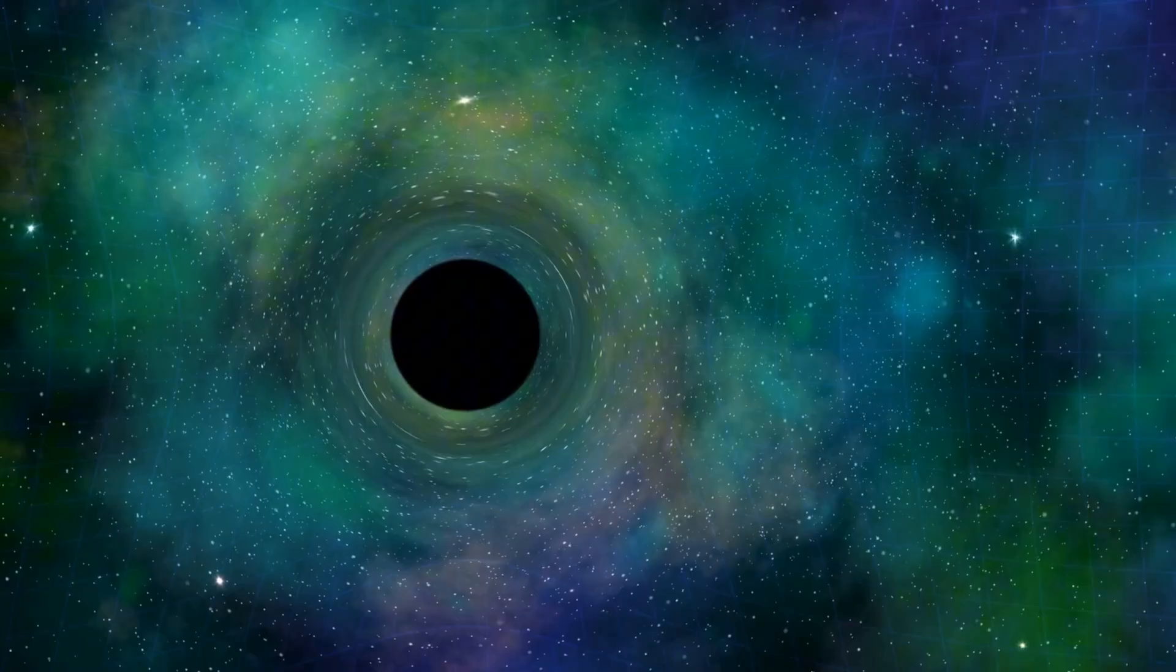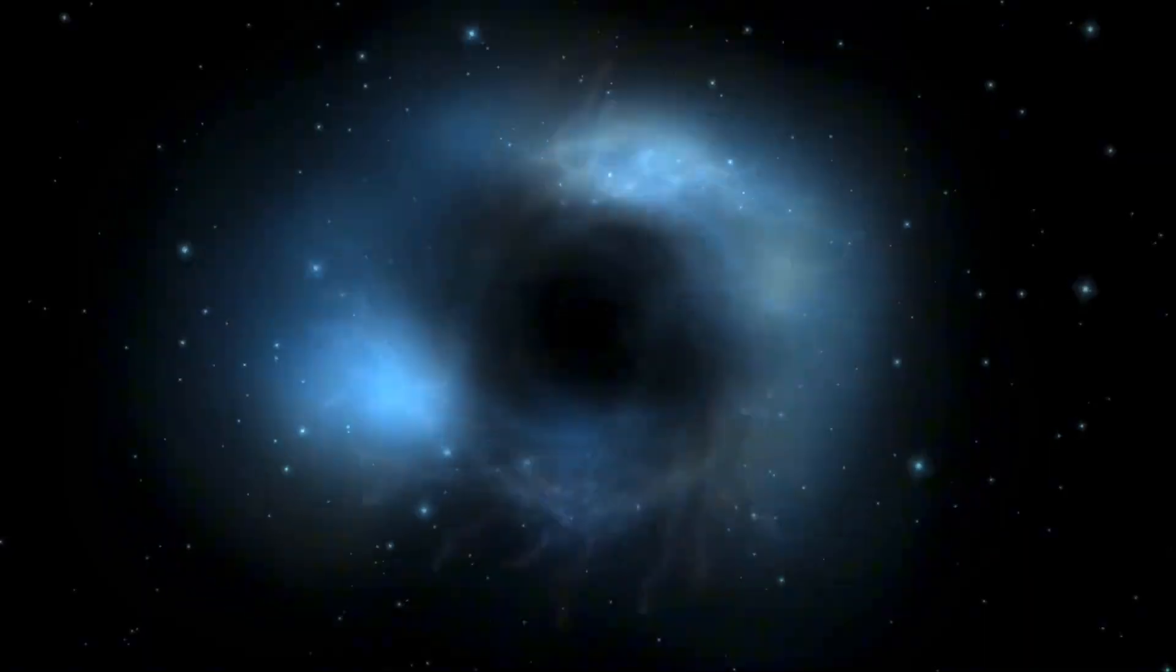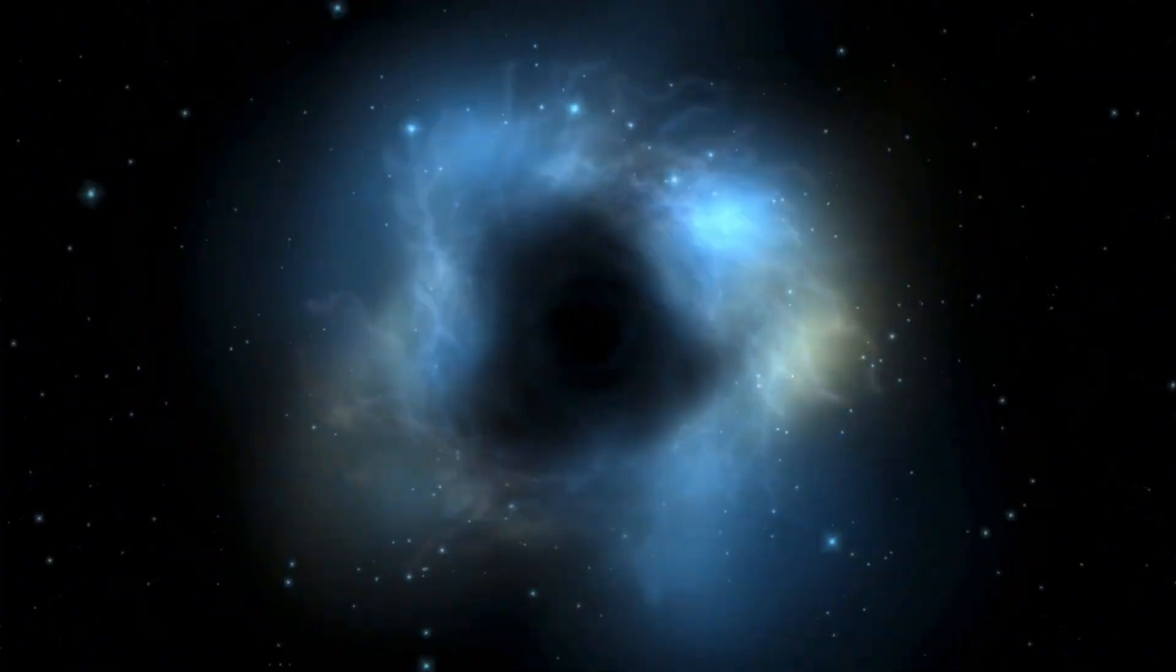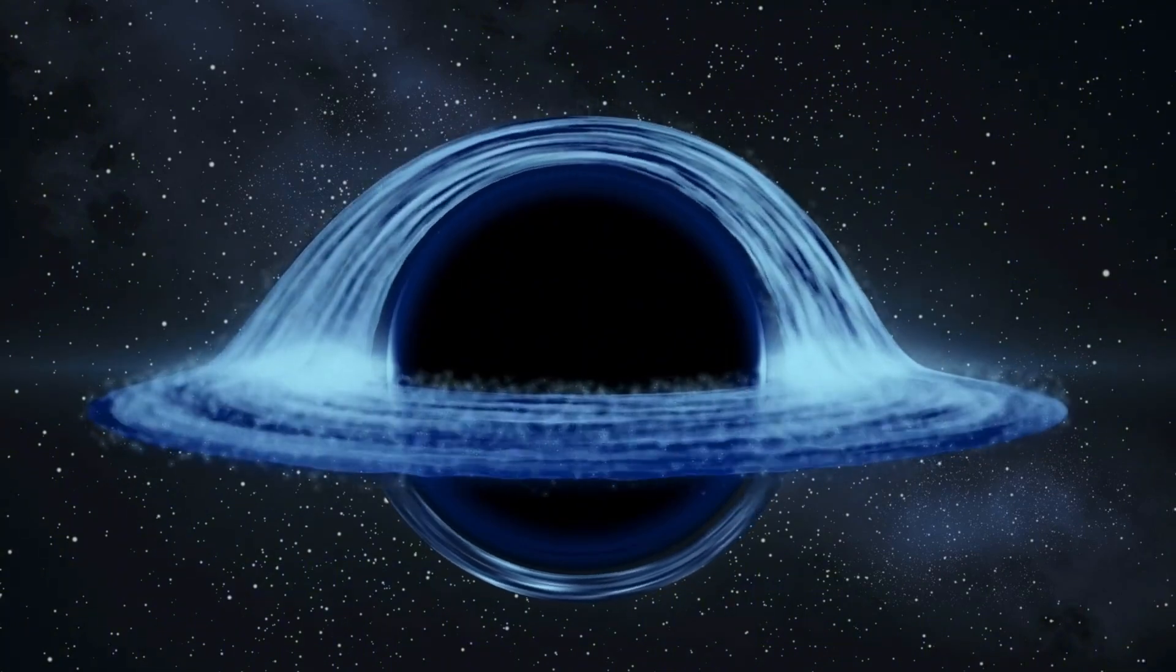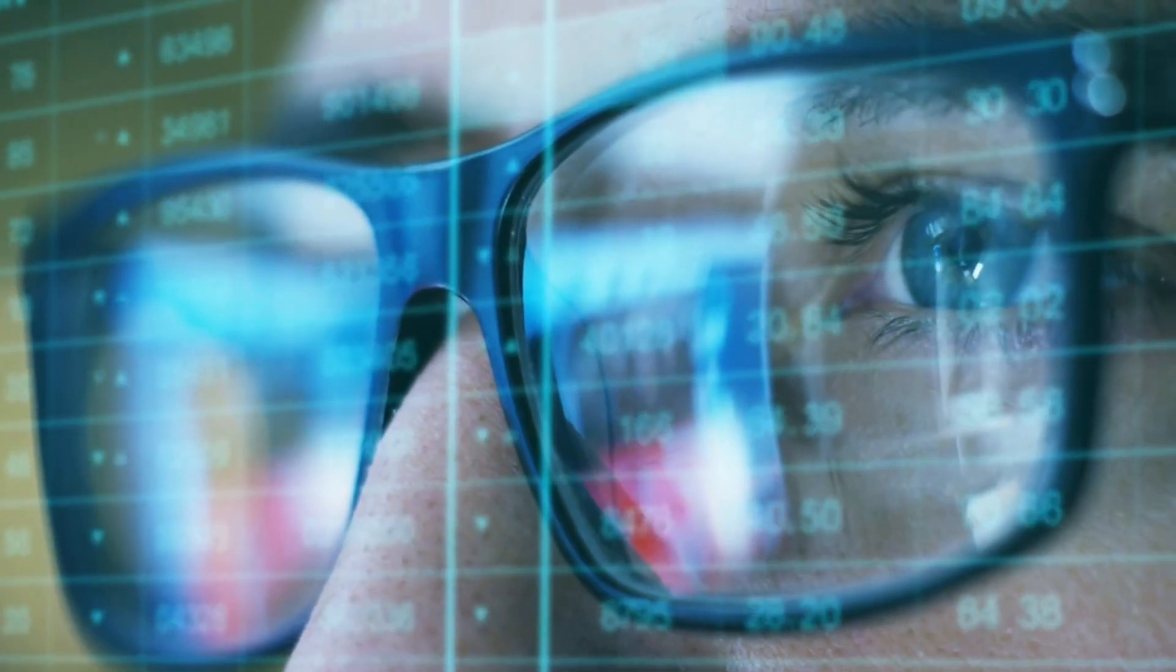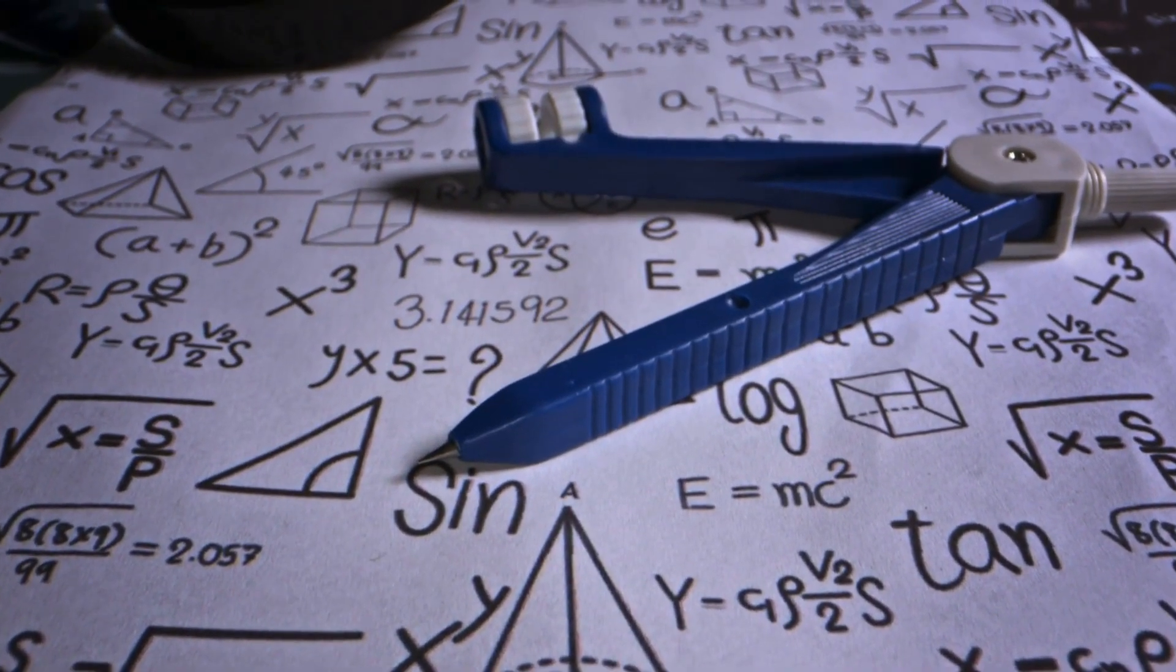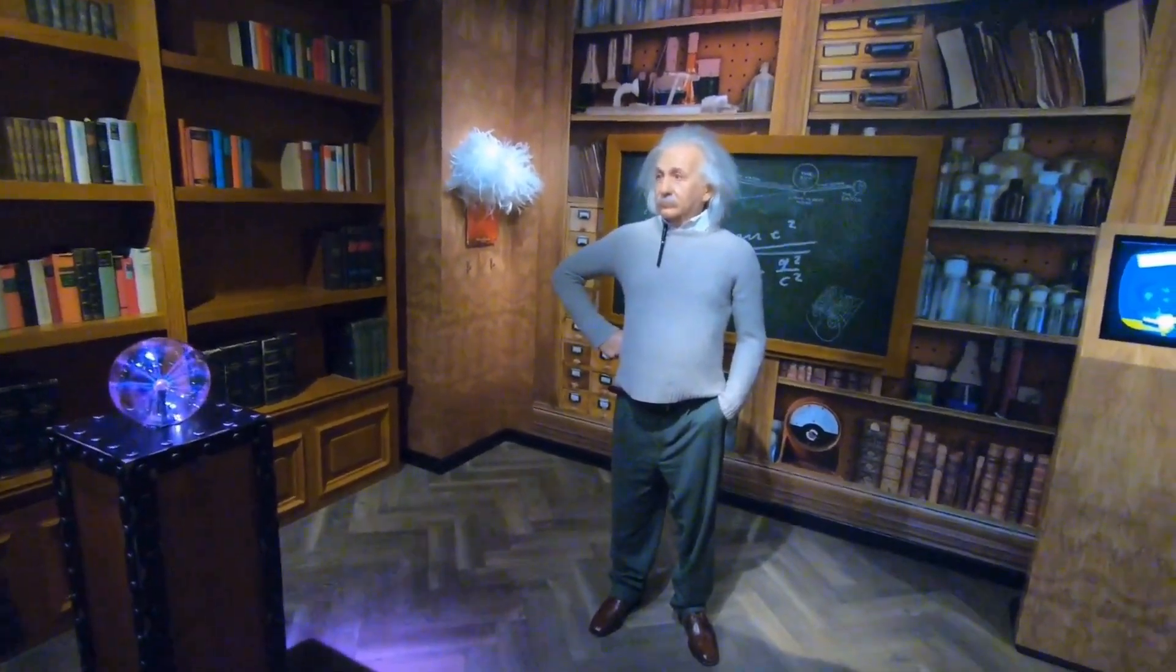Inside a black hole, space and time behave completely differently. According to general relativity, all the matter falling in gets compressed into a singularity, a point where gravity becomes infinite and space-time, as we understand it, breaks down. The problem? Physics can't currently describe what actually happens at this point. Our equations just stop working. Theories like Einstein's general relativity simply don't apply under these extreme conditions.